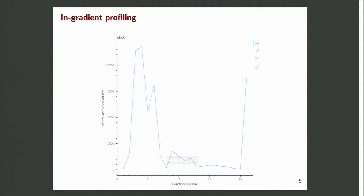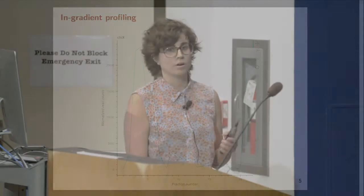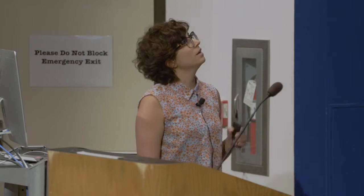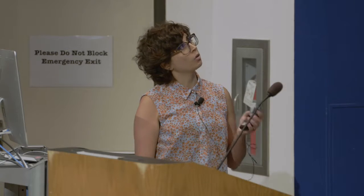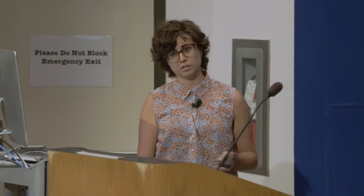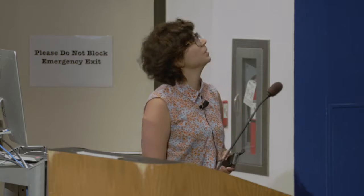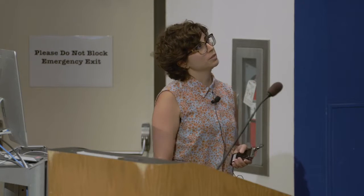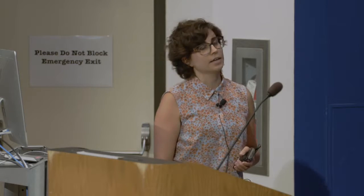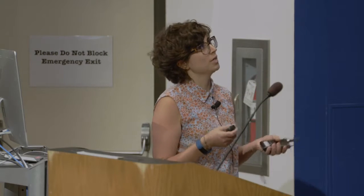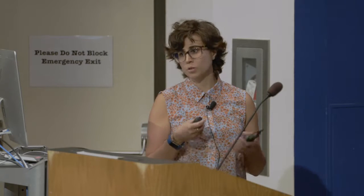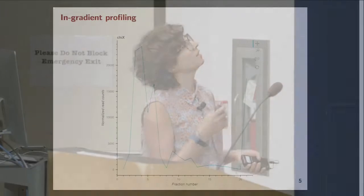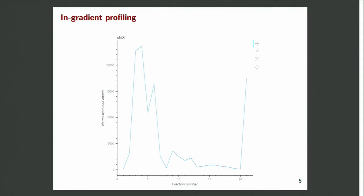Today I would just like to show some examples using real E. coli Grad-seek data. These outputs are all generated using the Gratitude tool. This is the first example: it shows kinetics that display the in-gradient behaviour of a specific transcript or a specific protein. In this case, this is chi-x small RNA.